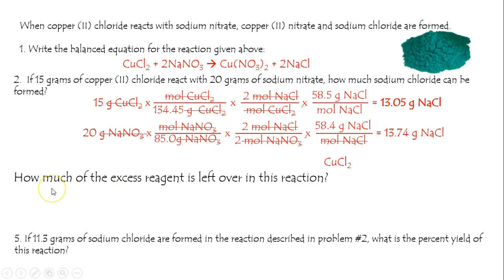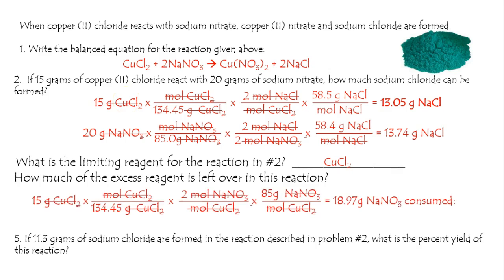How much of the excess reactant is left over in this reaction? Well, it's the sodium nitrate. So let's see how much of the sodium nitrate is consumed when we use up all of that copper chloride. This is a three-step problem that goes from copper chloride to sodium nitrate.